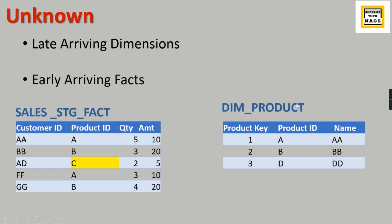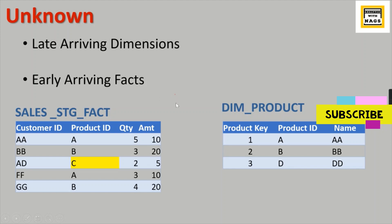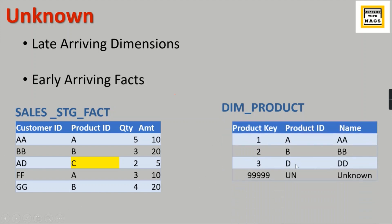That product does not exist in the business key. The ultimate idea of a data warehouse is to populate a fact table with the surrogate key of your dimensions. So when you do a lookup, it will fail — you will not get the respective keys for it.